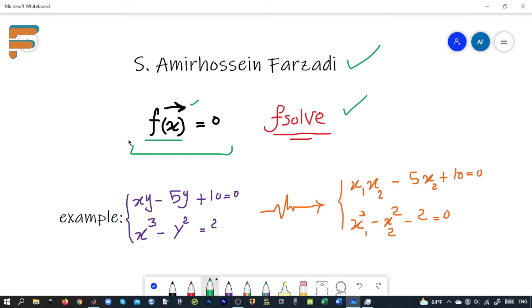Now we have a system of equations. For example, if we have a system with two unknown values in the form of x times y minus 5y plus 10 equals zero and x cubed minus y squared equals 2, first we need to rename these variables. We rename x to x1 and y to x2.